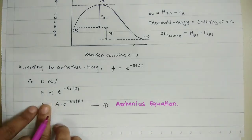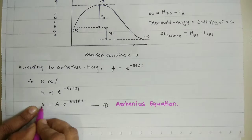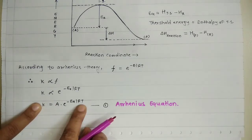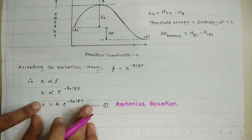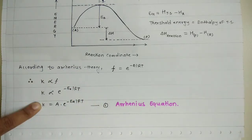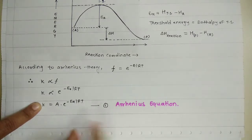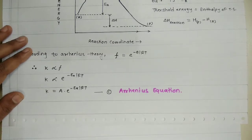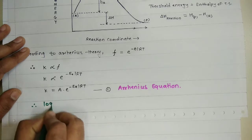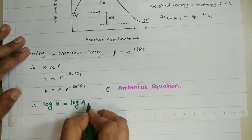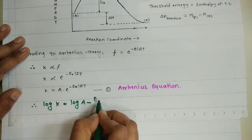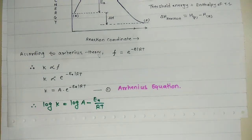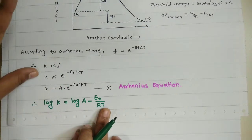The Arrhenius equation k = A·e^(−Ea/RT) shows that as you increase the temperature, the value of k increases, meaning the rate of reaction increases. This is the effect of temperature put forward by Arrhenius. Now, taking logarithm on both sides: log k = log A − Ea/(2.303·R·T). We can apply this equation for two different temperatures.